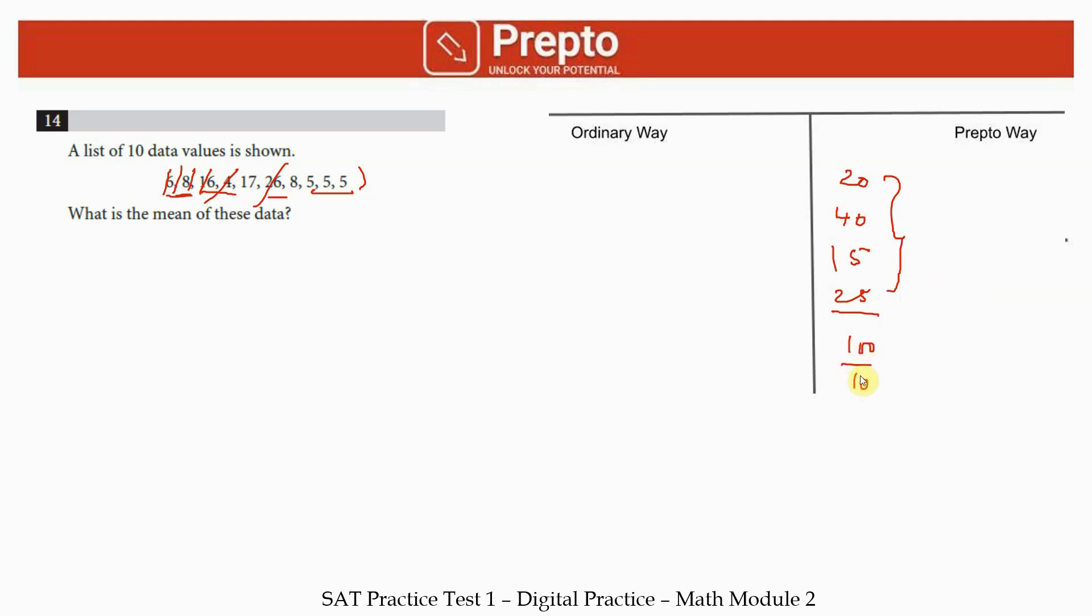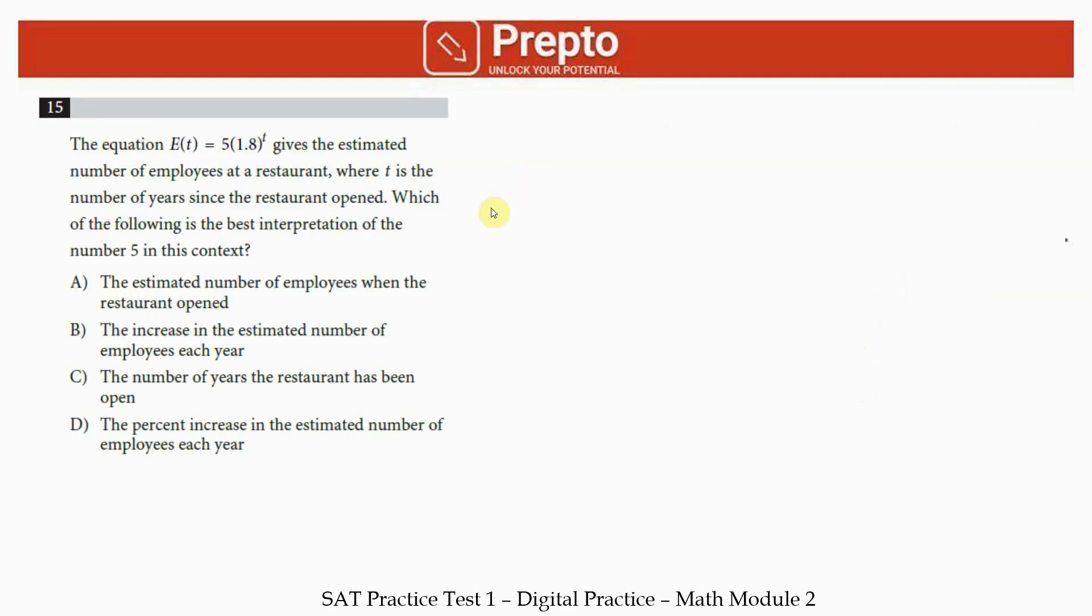Question 15: The equation E of t—these equations are popular. You already saw something similar in module 1. You basically have a starting value, that's always your first part, with a growth rate raised to the time period. They're clearly saying t is the number of years since the restaurant opened. 1.8 means the original 1 plus a growth rate of 0.8, which is 80 percent.